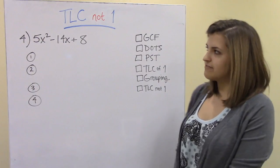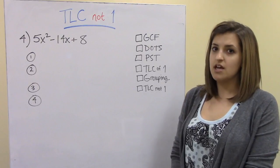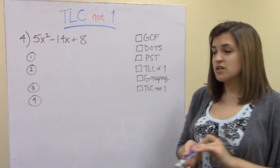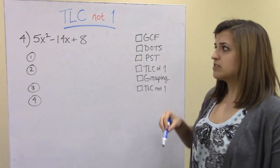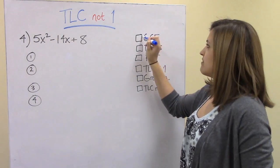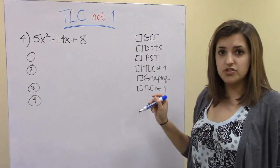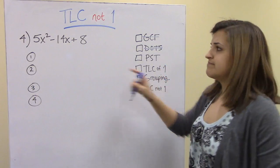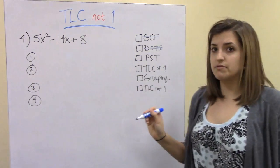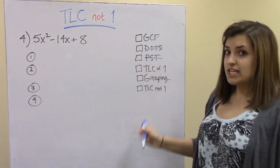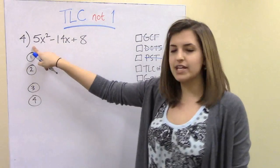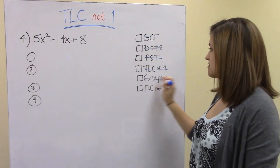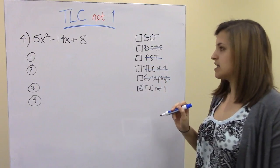In the next example, we have 5x² − 14x + 8. Before factoring, identify what type it is: not a greatest common factor, not a difference of two squares, not a perfect square trinomial since 5 and 8 are not perfect squares, not a trinomial with leading coefficient of 1 since the leading coefficient is 5, and not a grouping problem. So it must be a trinomial with a leading coefficient not equal to 1.